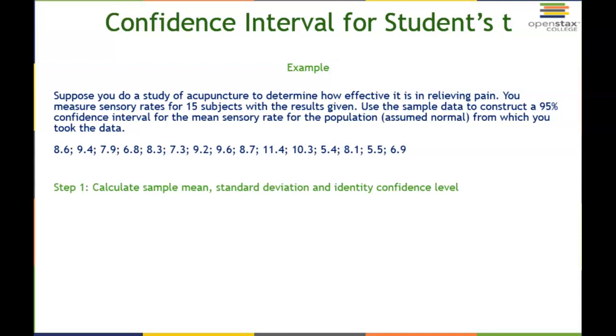The first step we want to do is calculate the sample mean, the sample standard deviation, and identify the confidence level. Throwing these values into a calculator, we get that x bar equals 8.2267 and the standard deviation is 1.6722. I just threw my data into the TI-84 and let it calculate the mean and standard deviation. Our confidence level is 95%, so 0.95.